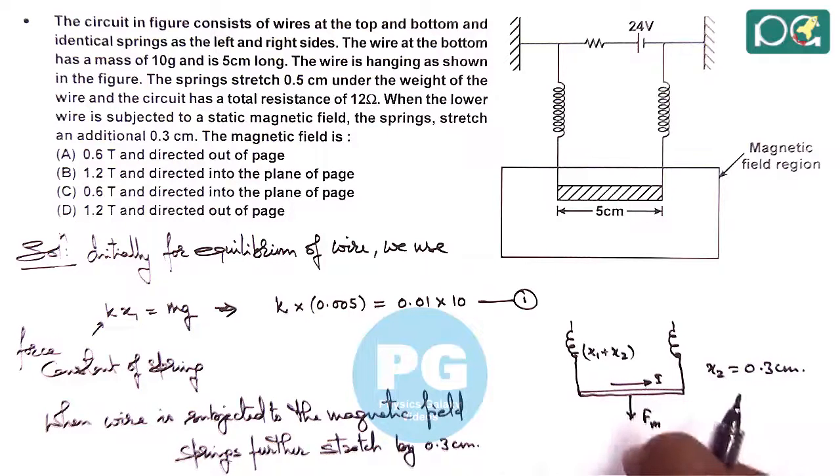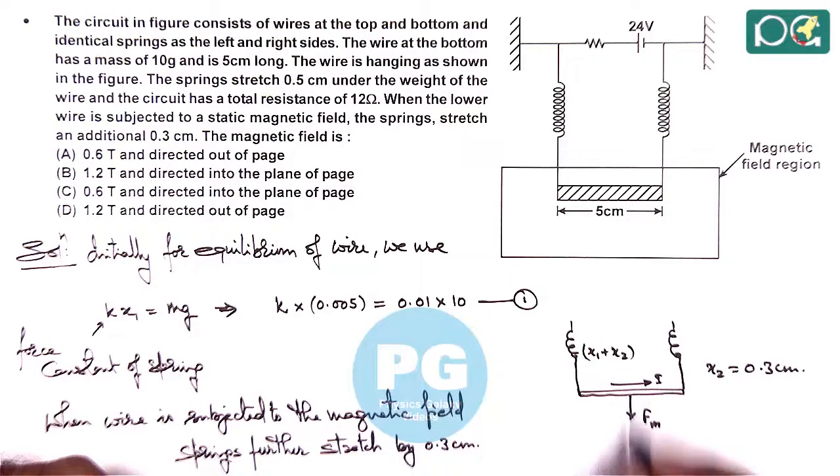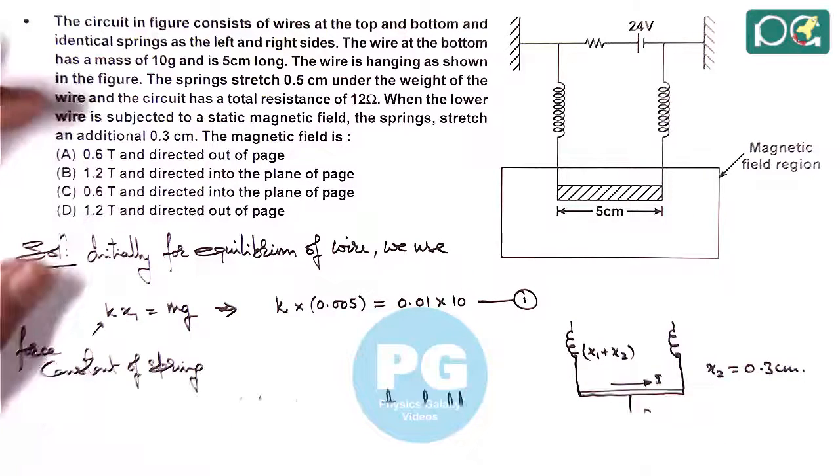Now for the magnetic force to be in the downward direction, here we can say the magnetic field must be acting in the upward direction. Then only by the right-hand palm rule we can say the force is in the downward direction.